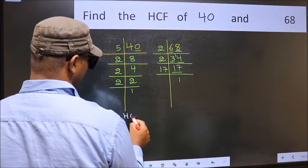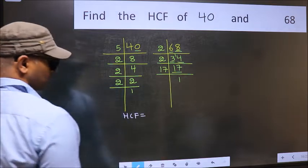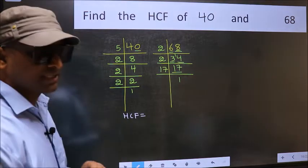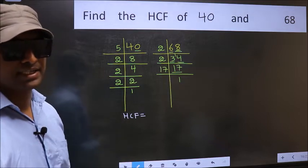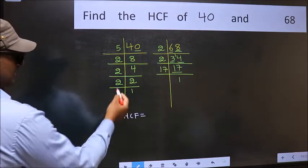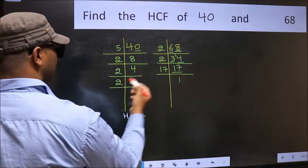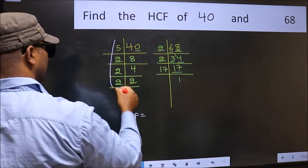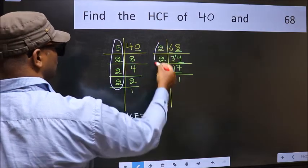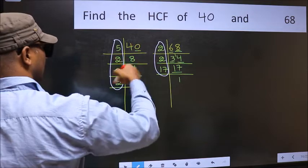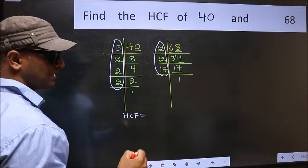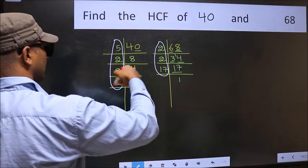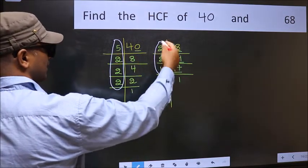Therefore our HCF is the product of the numbers which should be present in these two places. That is here and also here, here and here. So now let us find the numbers which should be present here and here.